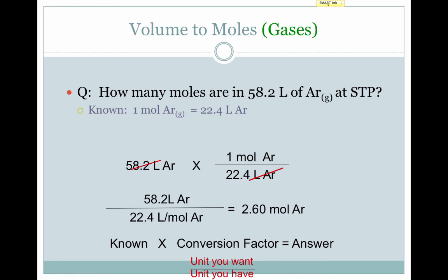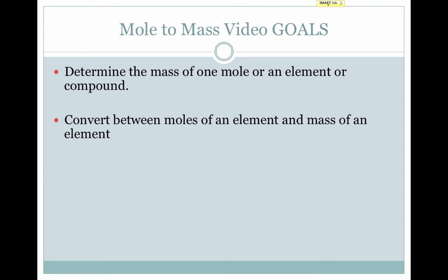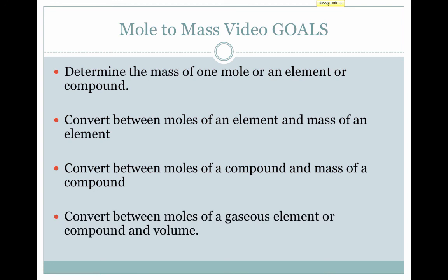That brings us to the end of this video. Let's review our goals. First, we learned to determine the mass of one mole of an element by looking at the periodic table, and of a compound by adding together the masses of individual elements. Then we learned to convert between moles and mass of an element using the molar mass from the periodic table, and between moles and mass of a compound using the calculated molar mass. Finally, we learned to convert between moles of a gaseous element or compound and volume using 22.4 liters per mole, which is true of any gas at STP. Note that molar mass and atomic mass are used interchangeably — they are the same thing.